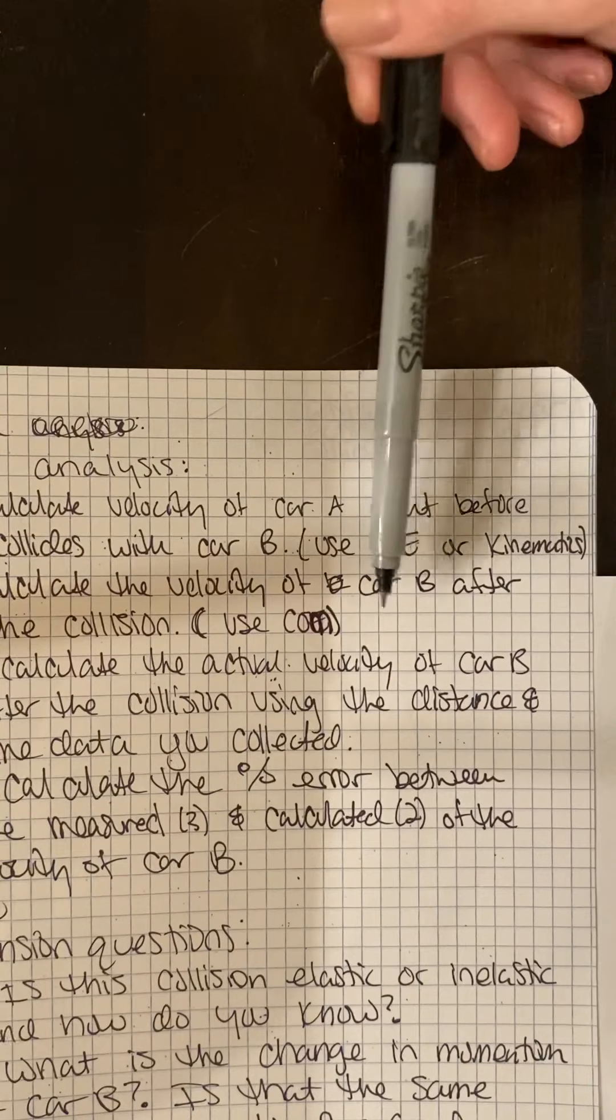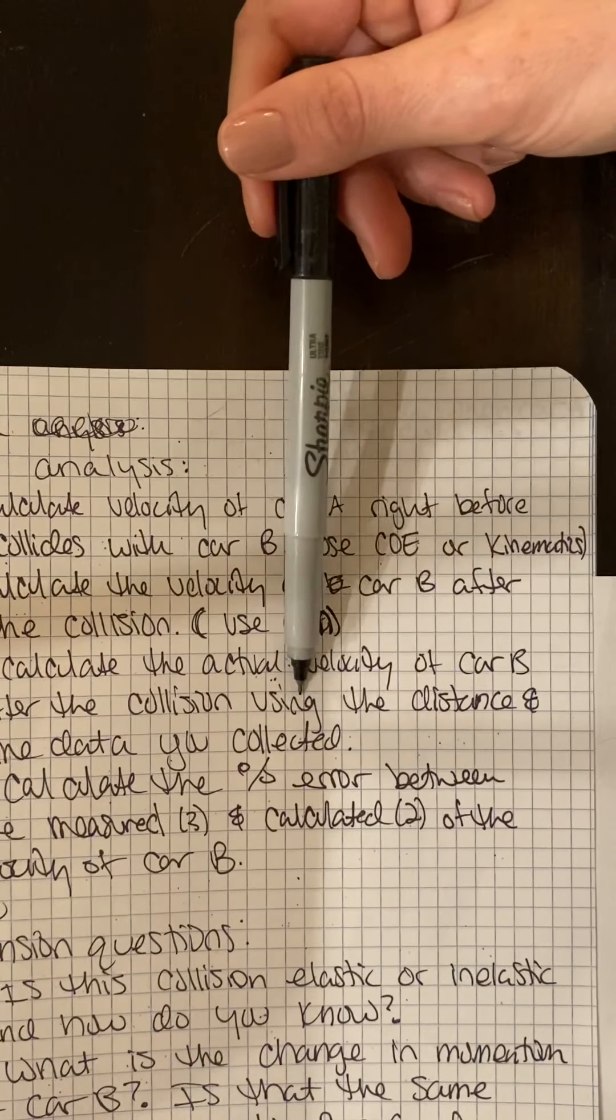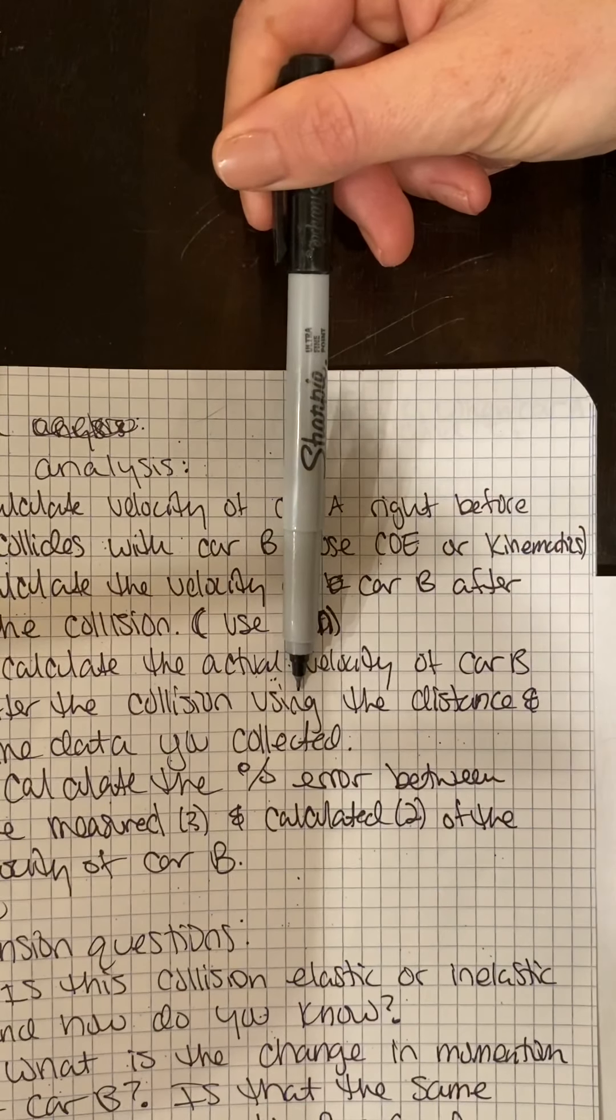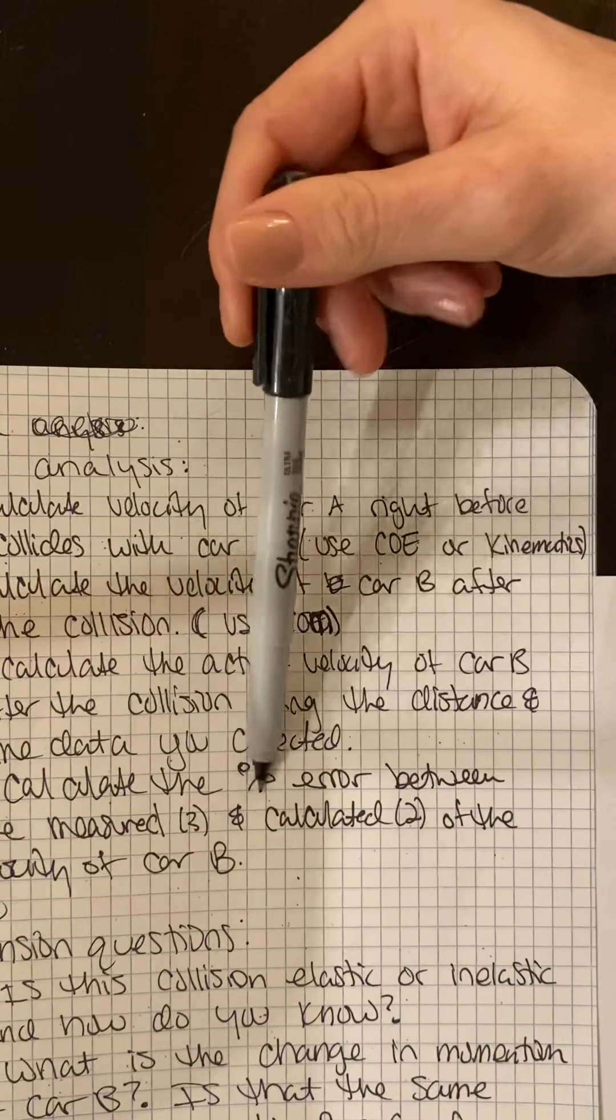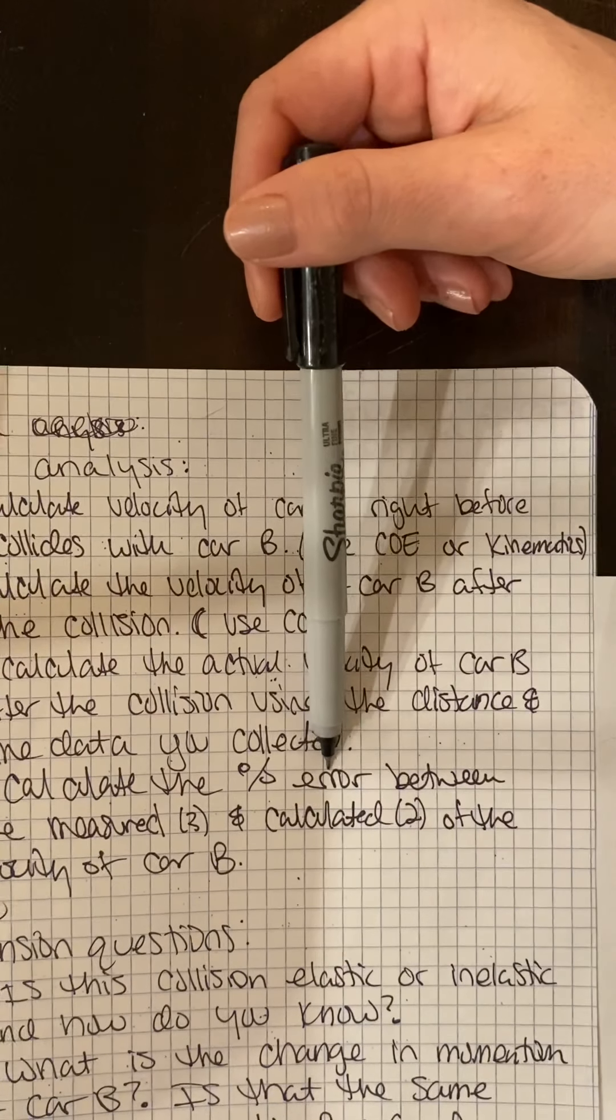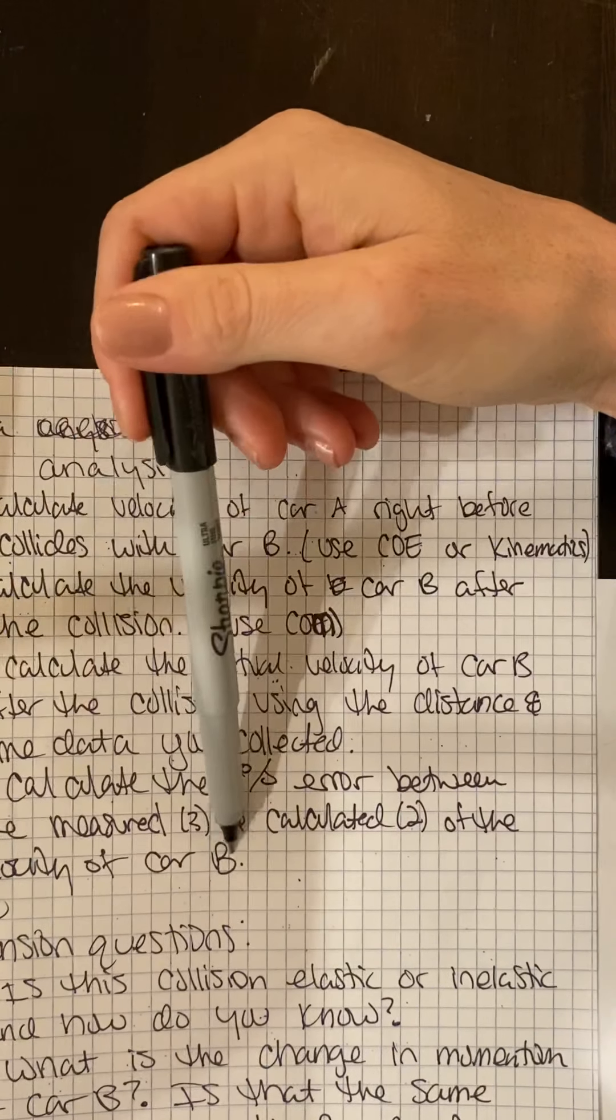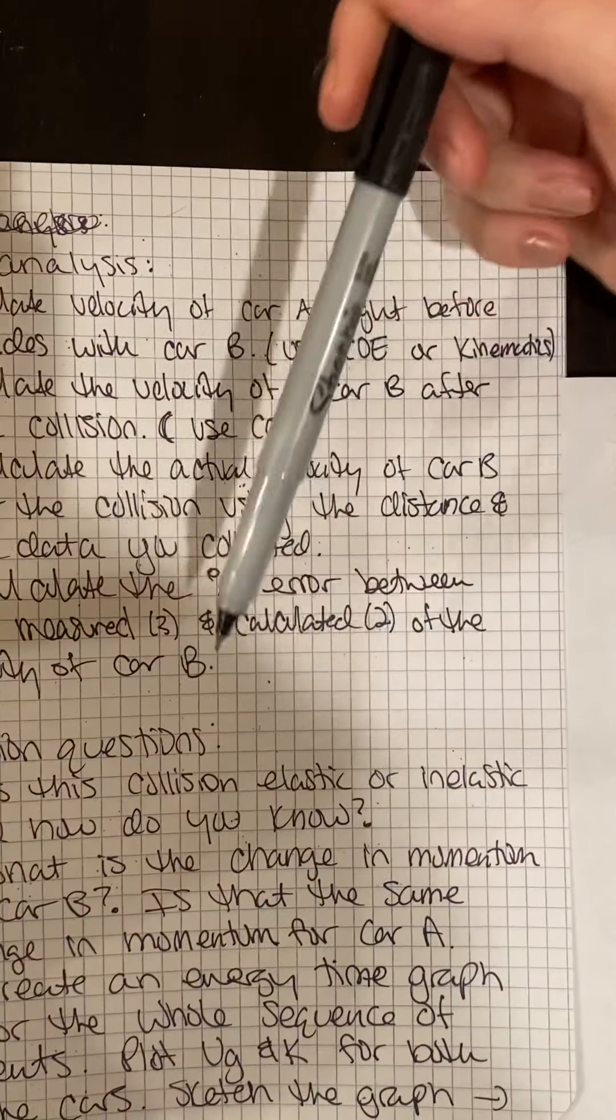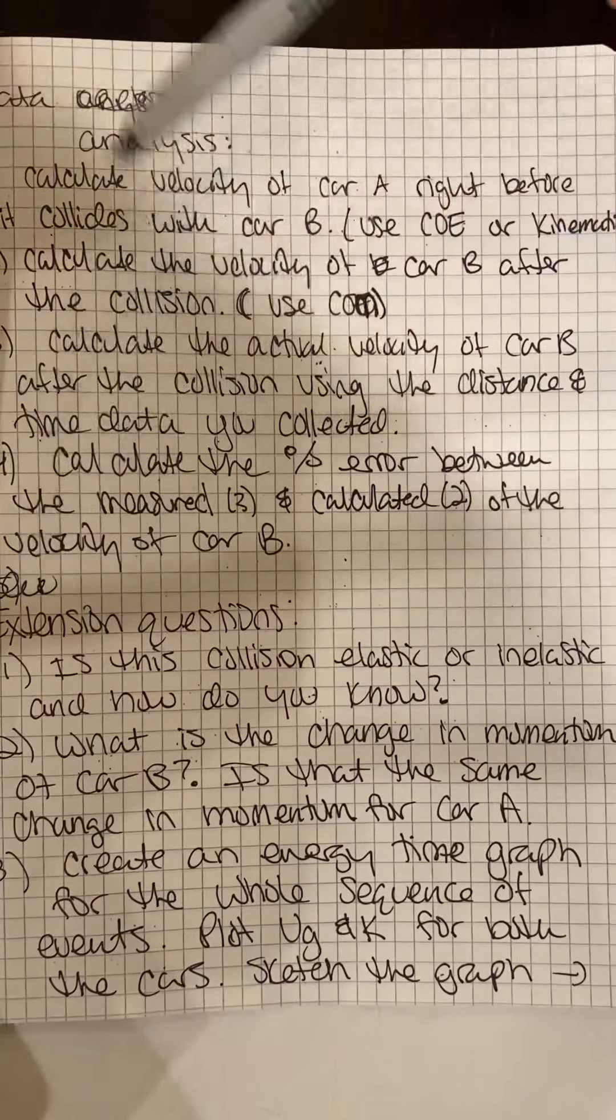This is our theoretical because we're using calculations. This is going to be our actual because we did measure this time and displacement. We're going to calculate the percent error between the measured and the calculated for the velocity of car B. They should be close. If they're not close, I want you to tell me why, what you think, why the reason they're not close.